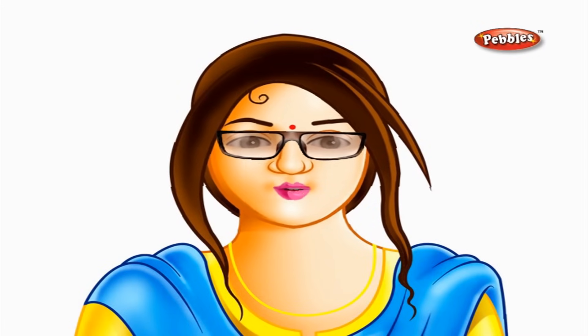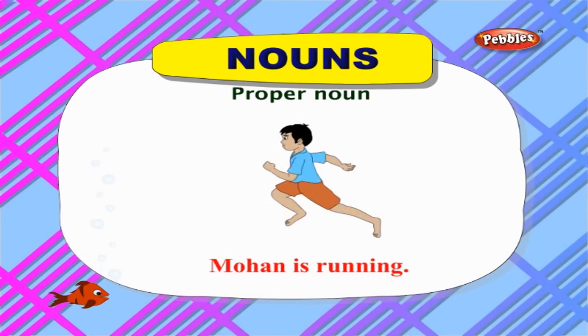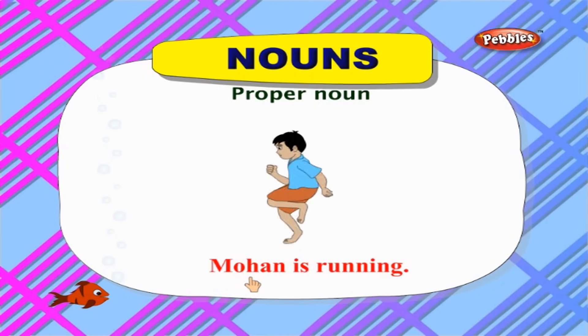Proper nouns are also called special nouns. These are the special names given to a particular person, place, animal, or thing. Let us see some examples: 'Mohan is running' — here, Mohan is the special name given to a particular boy.